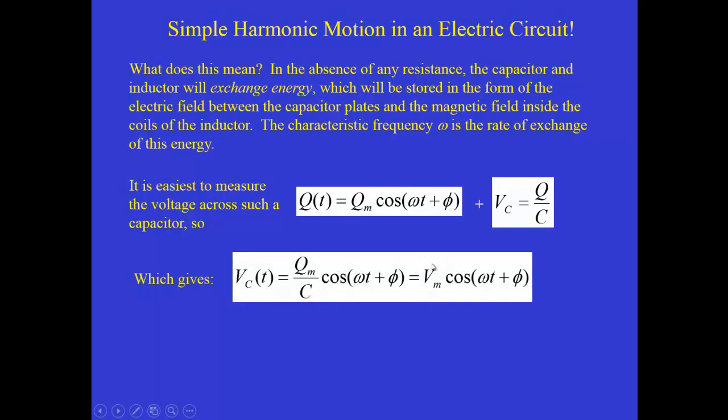So we get Q_M over C out in front of the cosine. And that simply is the maximum voltage. So initially, if all the charge is on the capacitor, its initial voltage will be maximum, then it will go down to zero, then it will go to a negative V_M, and then back to zero, and finally back to positive V_M. So the voltage will periodically change, but it will oscillate back and forth between a maximum and a minimum value.